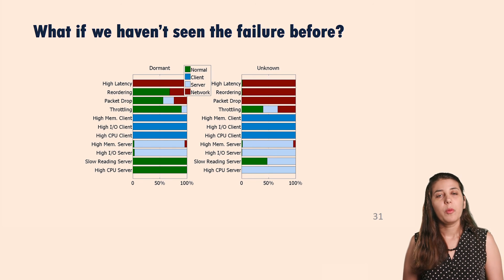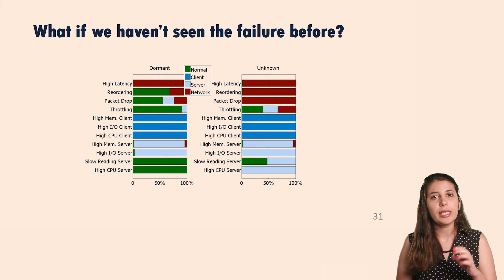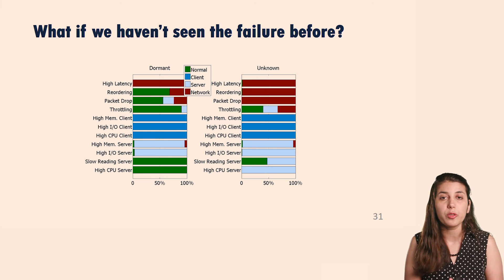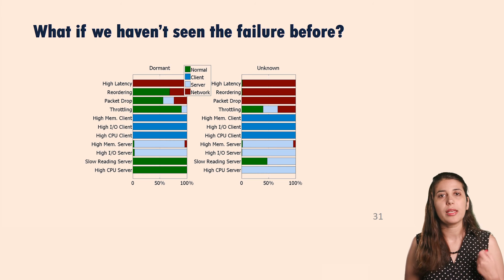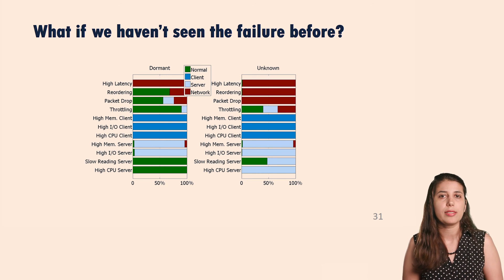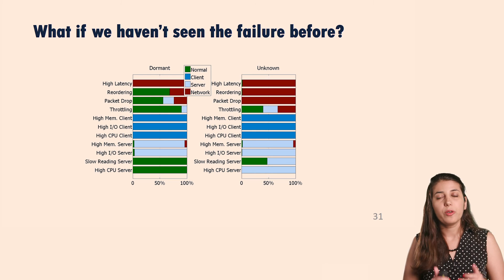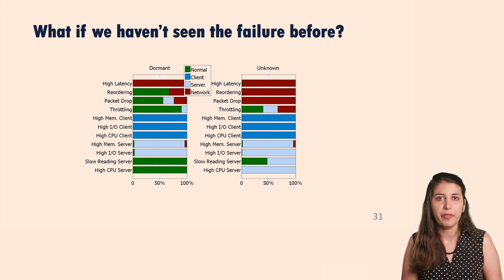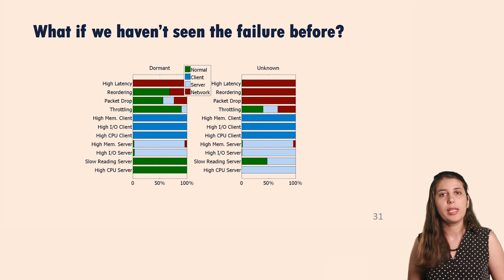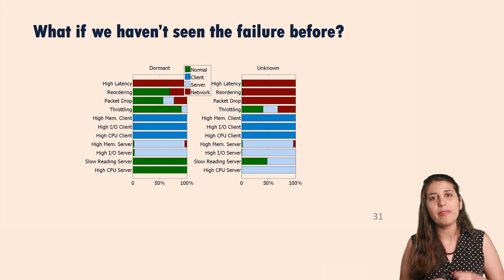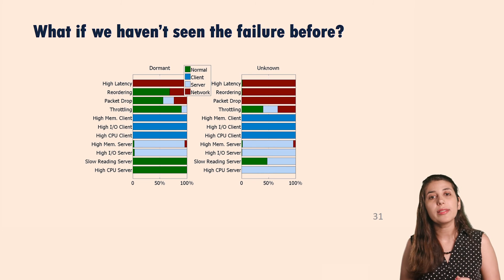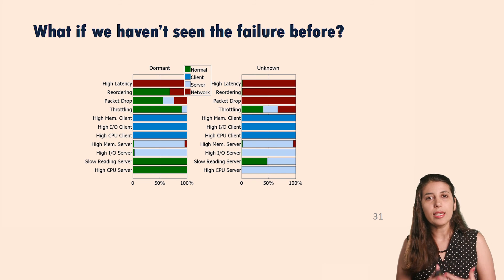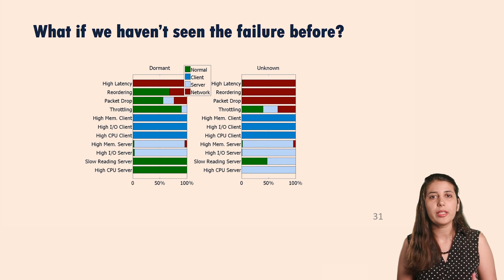For dormant failures, we purposefully mislabeled each failure class as normal in the training set and observed how it's classified during testing. For example, throttling is correctly classified as a network failure. So for dormant failures, failures are either correctly classified or classified as normal — we're not incorrectly blaming anyone who isn't responsible. For unknown failures, even without examples of that particular failure in the training set, we're still able to correctly classify it. This tells us there's significant similarity between failures within a class, so even unseen examples can be correctly identified.